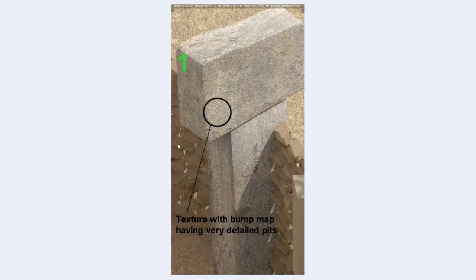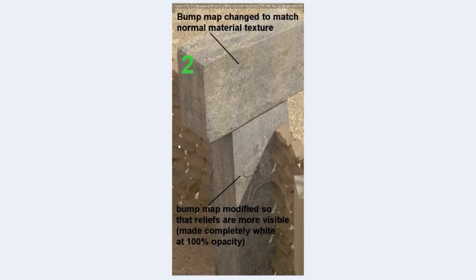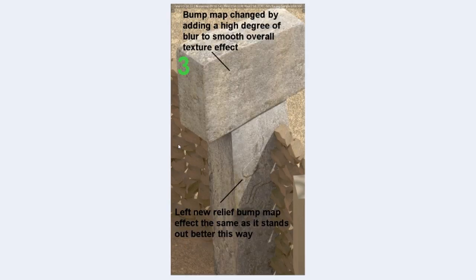These images show the different texture tests I was doing. I had this texture playing with the bump maps and it showed very detailed pits. Then I changed the bump mapping to try to get a better look. I also showed how I was modifying the reliefs with the bump mapping. Because the textures were so pitted-looking and had too much detail, I added some blur to the texture to give the effect you see there, and I ended up using that new approach.